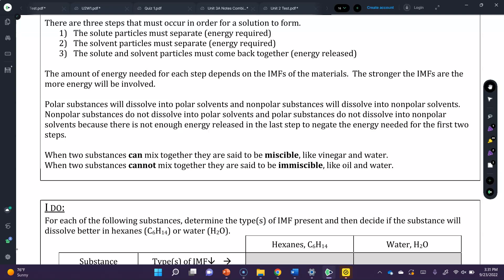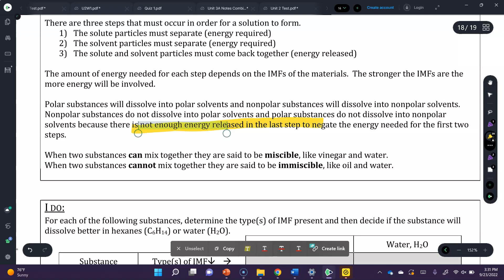The amount of energy needed for each step depends on the intermolecular forces of the materials you're separating. The stronger the intermolecular forces, the greater the energy involved. Polar substances will dissolve into polar substances and non-polar substances into non-polar substances. Non-polar substances do not dissolve into polar and vice versa because there is not enough energy released in the last step to negate the energy required for the first two. When two substances can mix, we call that miscible, like vinegar and water. When they cannot mix, they are said to be immiscible, like oil and water.